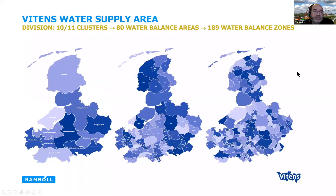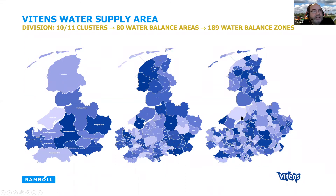This is Vitens. At this moment we have one KPI — non-revenue water as a percentage for the whole Vitens area. That's the starting point when I was introduced as an external consultant in October 2020. Vitens has already divided their total water supply area into 10 or 11 clusters. Those clusters are already divided into what we call water balance areas, which are even subdivided into water balance zones. In the end, during this year, I have to develop 280 water balances: one for Vitens, 10 for clusters, 80 for water balance areas, and 189 for the water balance zones. That's the challenge currently.